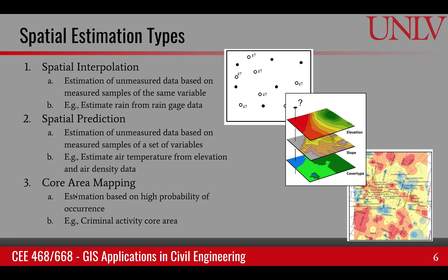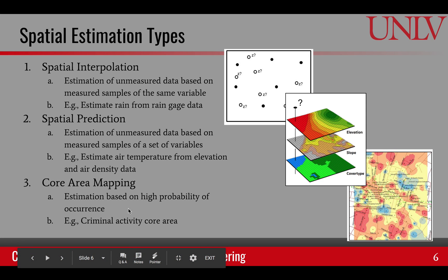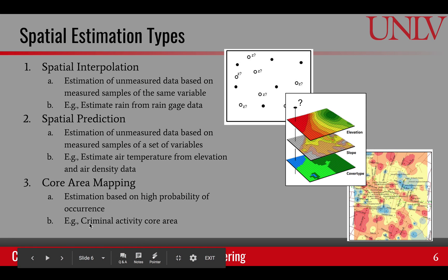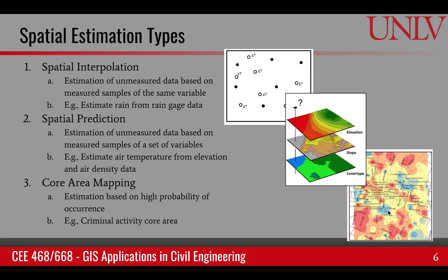The third type is core area mapping. In this case, we estimate based upon the high probability of occurrence — more occurrence versus less. For example, a criminal activity core area map where red shows high activity, orange shows less, and yellow and blue show lesser values. In all of these cases, we are taking sample points and estimating values at unknown, unmeasured points.